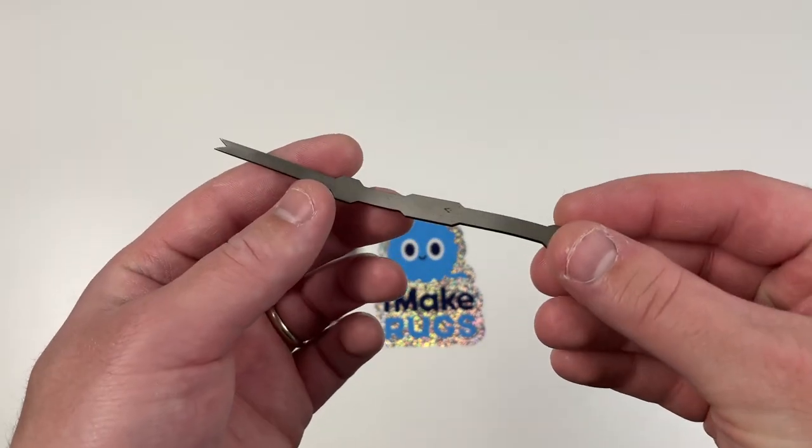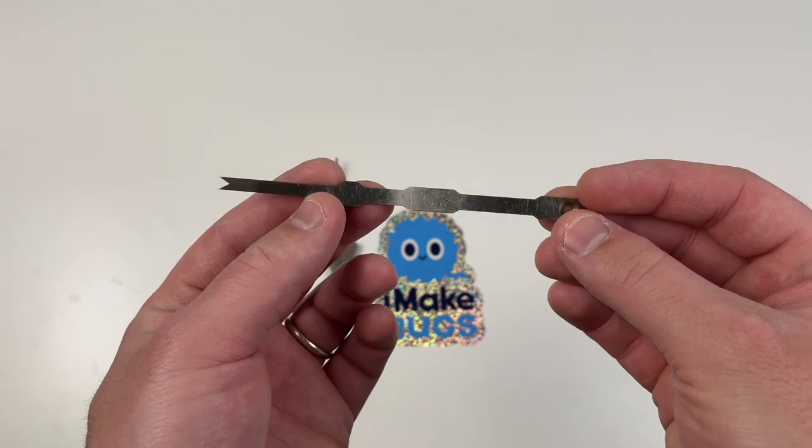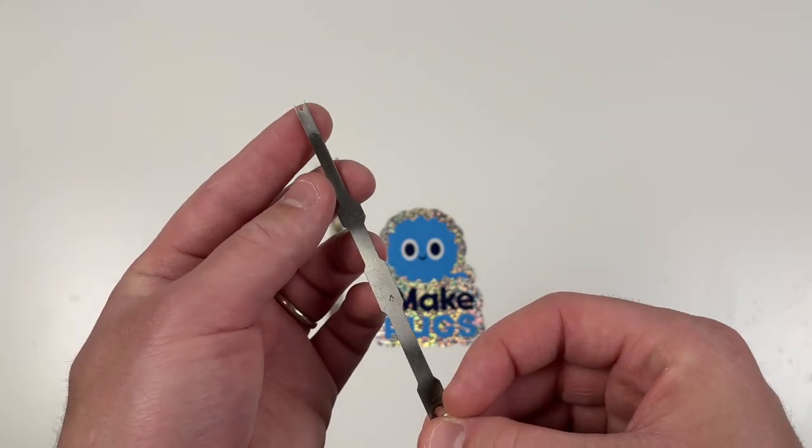On the right I have a loop pile scissor. Its job is to push the yarn into the fabric and create loops, and it never cuts the yarn.